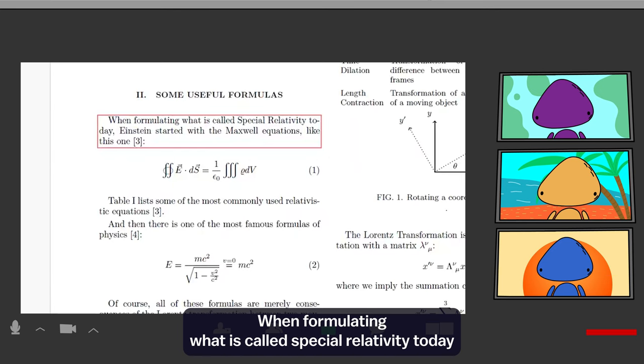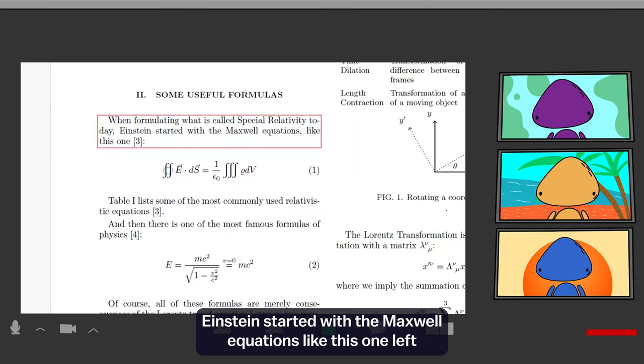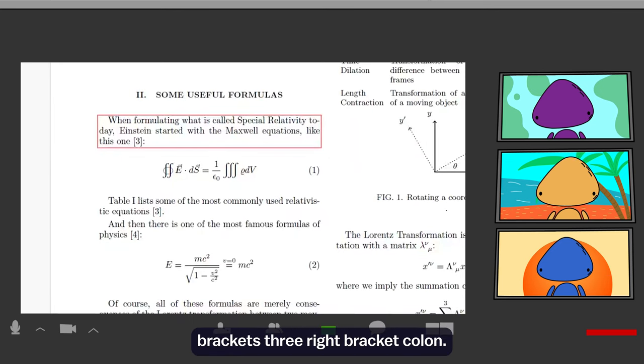When formulating what is called special relativity today, Einstein started with the Maxwell equations, like this one left bracket three right bracket colon.